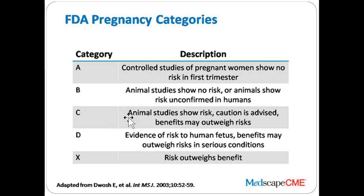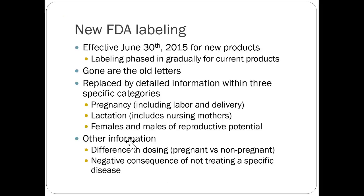My point is: don't get hung up on the categories too much — and that's why the FDA removed the categories altogether. Category D means there is evidence of risk to the human fetus, though benefits may outweigh risk. If something is category D, that's a pretty big red flag — it means there was evidence during a clinical trial that it caused risk or harm to a developing fetus. Category X is a contraindication — a no-go.